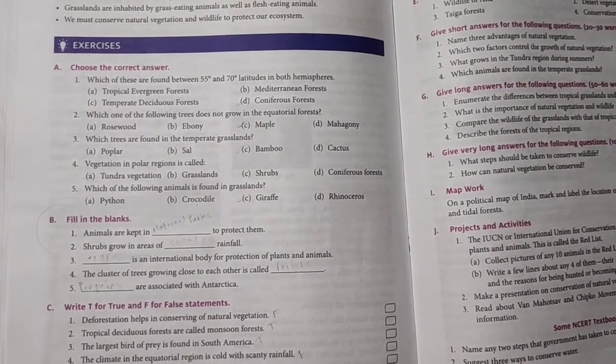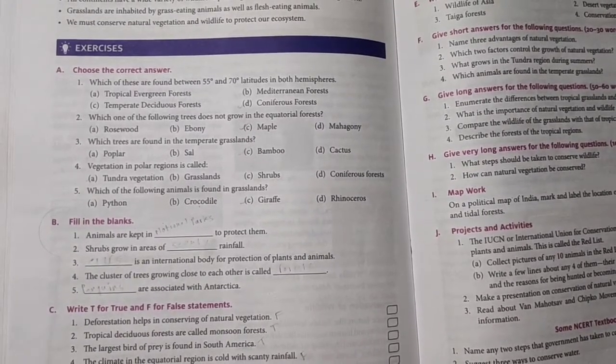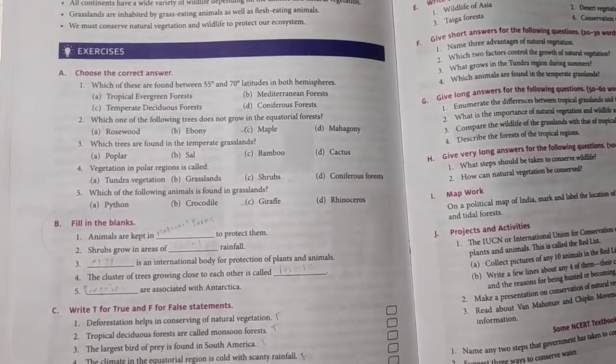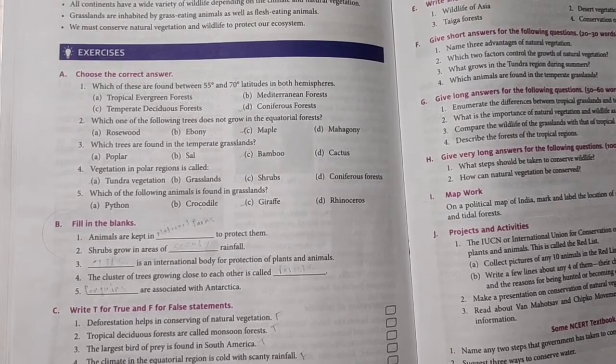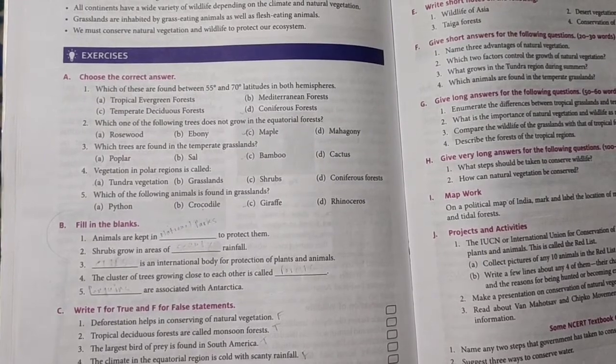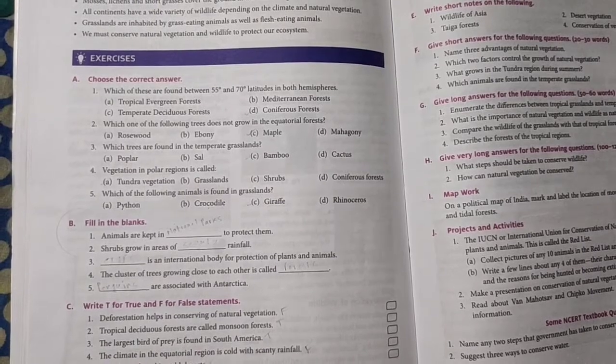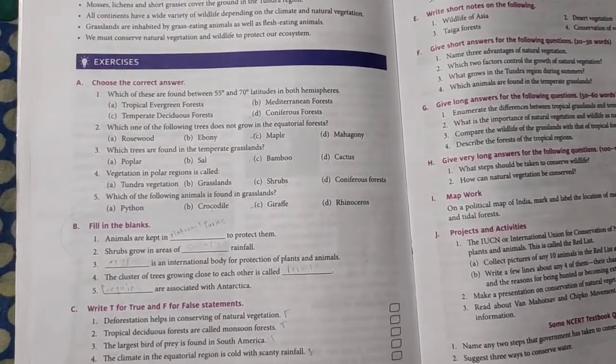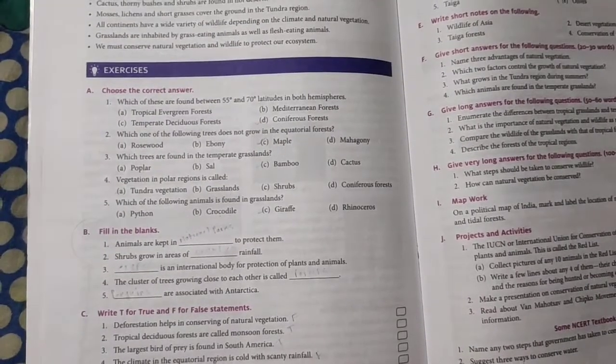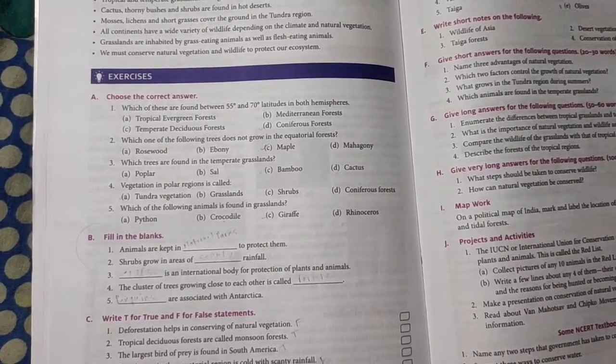Question three: which trees are found in the temperate grassland? Poplar, sal, bamboo, and cactus. The answer will be bamboo. Question four: vegetation in polar region is called tundra vegetation, grassland, shrubs, or coniferous forest. There is not much vegetation in polar region, but moss-like vegetation can be found. It is also known as tundra vegetation.